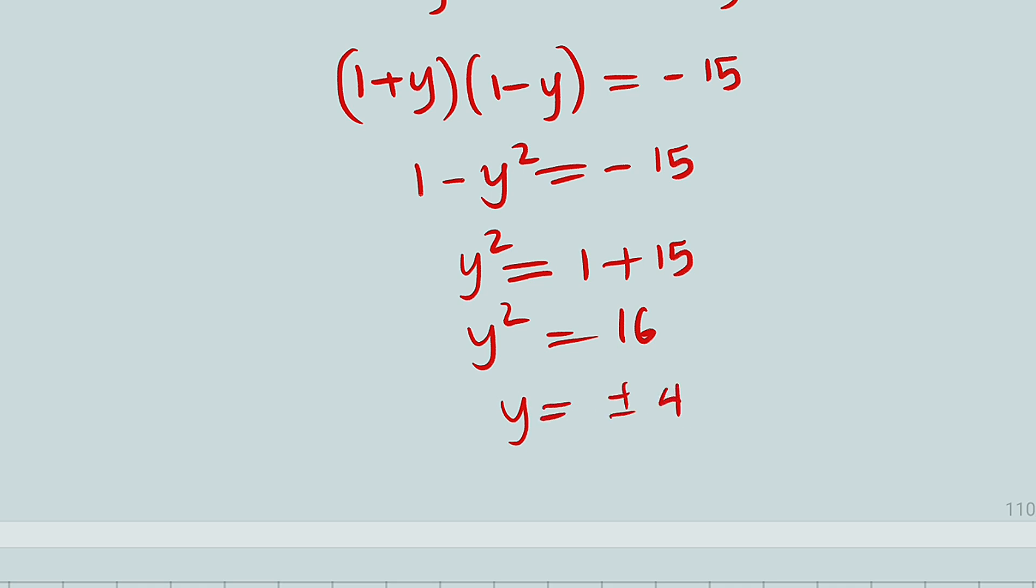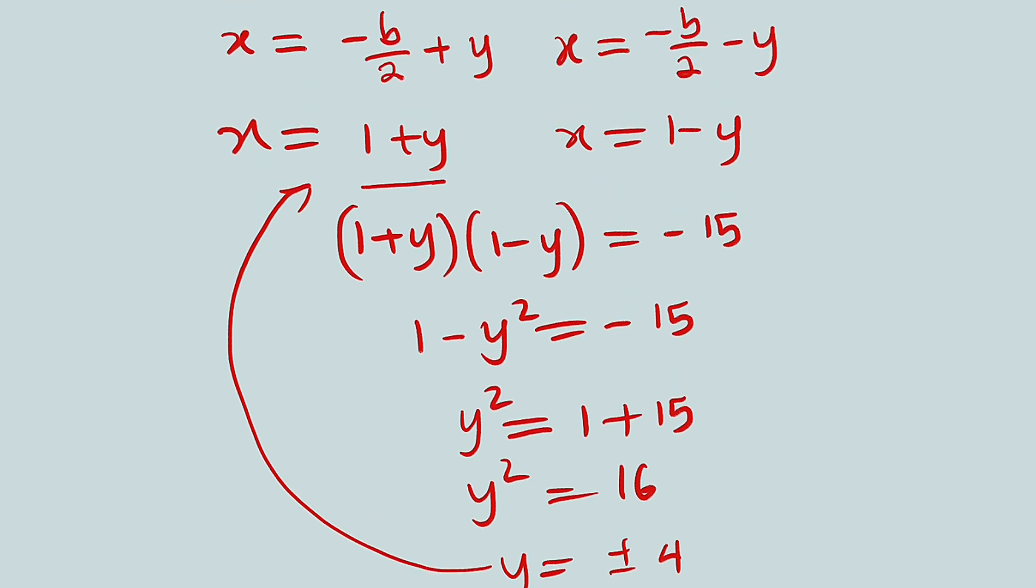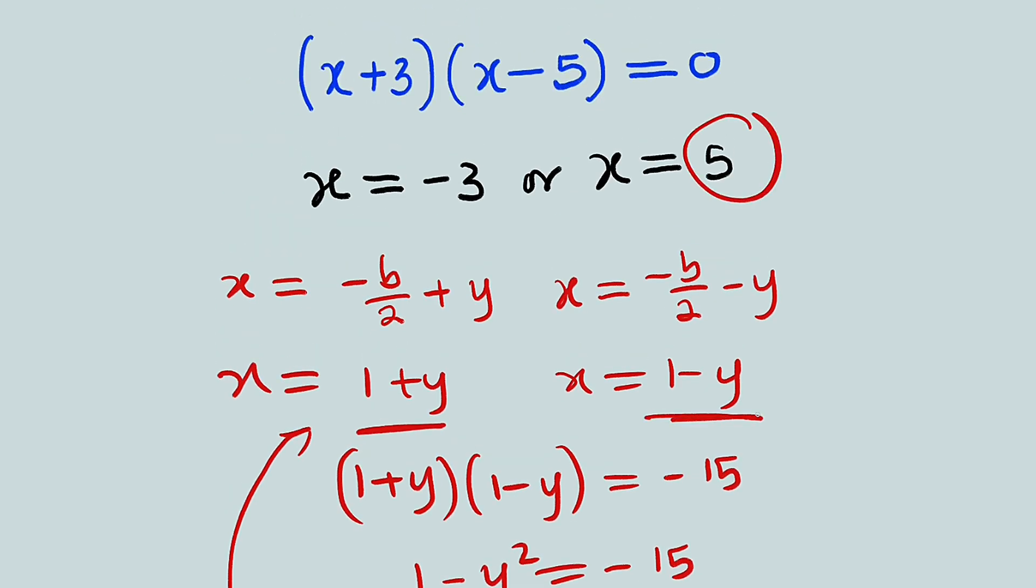Though you can use one because you can see even here we have plus or minus. So if you want to get your roots back, all you have to do is to substitute the value of y back into our main roots, which are 1 plus y and 1 minus y. So you can see that 1 plus 4 will give us 5, which is this, and 1 minus 4 will give us this minus 3 back.